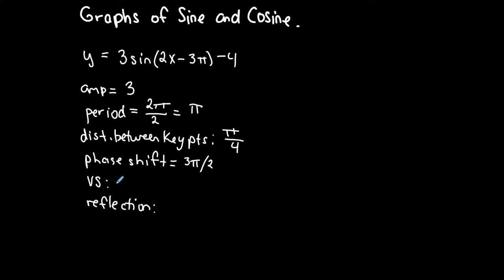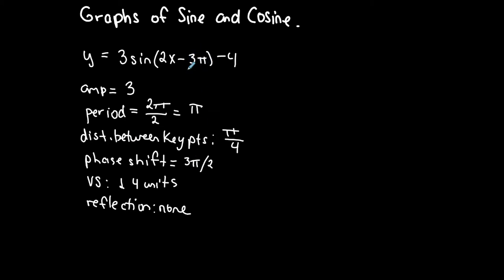That means we're moving to the right 3π/2 radians from the original function. For the vertical shift, I look for a number added or subtracted outside the parentheses — in this case minus 4, so vertical shift down 4 units. For vertical shift, we follow the sign: minus means down, plus means up. There is no reflection because there is no negative in front of the trigonometric function.